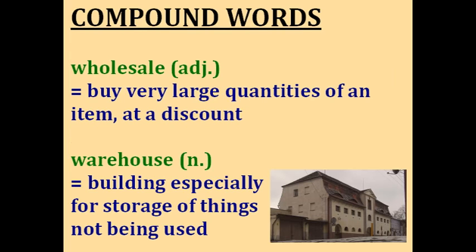Wholesale. Sometimes companies buy very large quantities of items from a manufacturer in order to get a discount. For example, they'll buy 10,000 pairs of shoes at a reduced price. This is called buying wholesale because they're going to then sell those shoes for a profit. If they buy so many items, they need to store them somewhere before selling them, so the items can be stored in a warehouse — a building used especially for storage of things that are not being used at the moment.